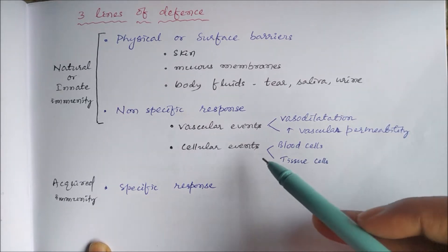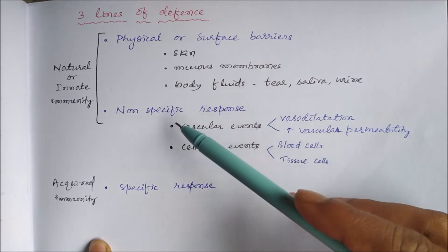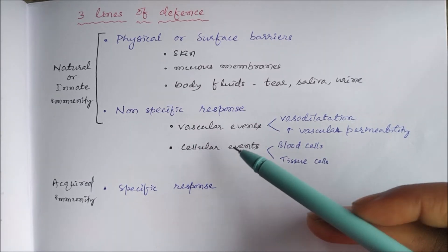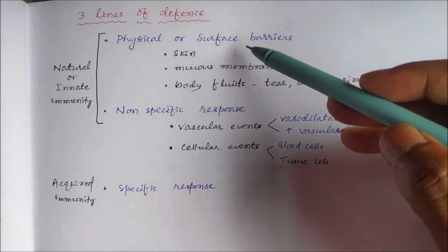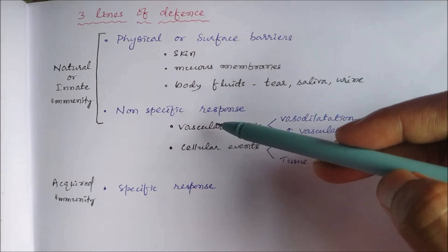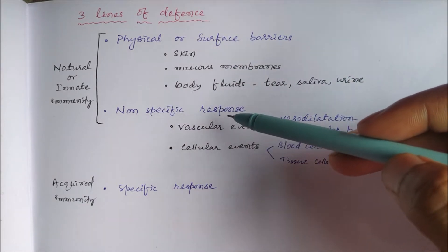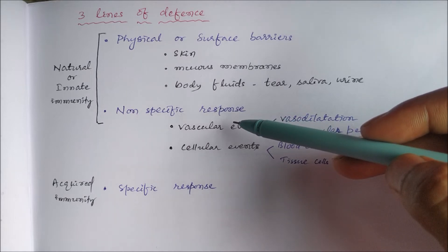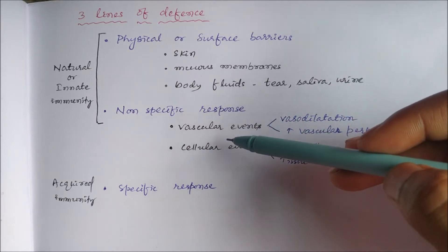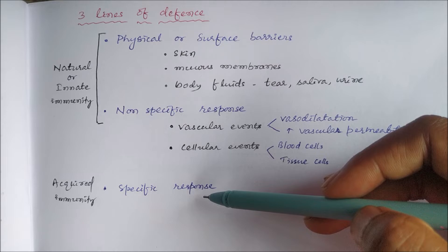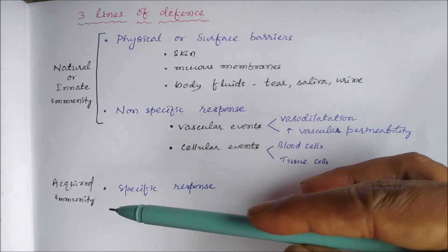The cellular events include blood cells like granulocytes and monocytes, and tissue cells other than blood cells. They provide the non-specific response. When the physical or surface barrier is not sufficient, non-specific response provides immunity. When non-specific response is not sufficient, then specific response provides immunity through acquired immunity.